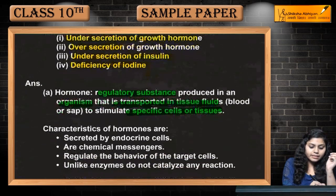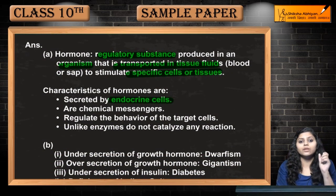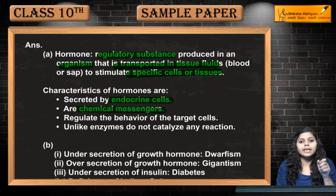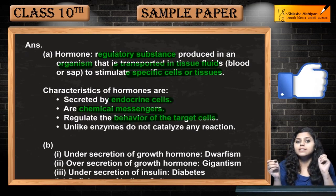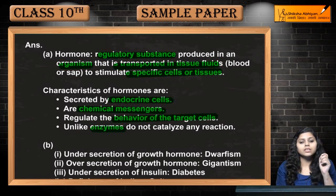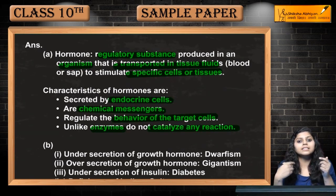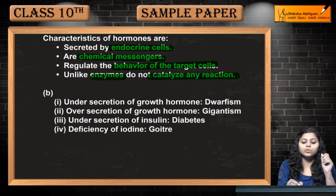Hormones are secreted by endocrine cells. They are chemical messengers. They regulate the behavior of target cells — they go to the target cells and regulate them. Unlike enzymes, they do not catalyze any reaction. This is how enzymes and hormones are different.